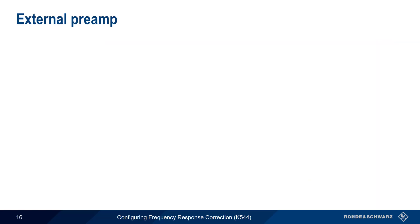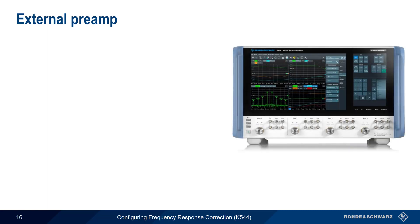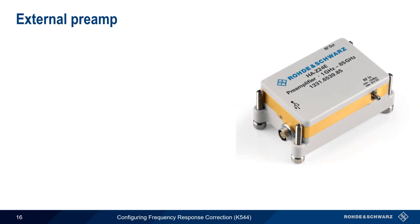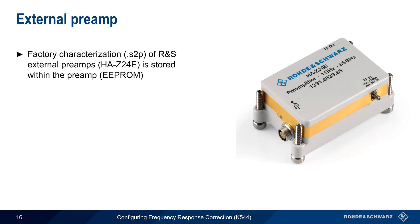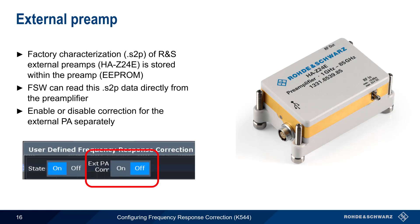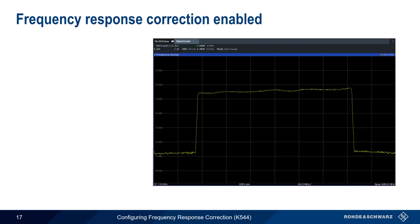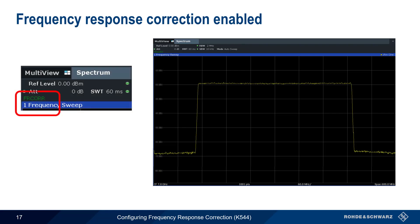Frequency response correction typically requires characterization of devices or components in the test setup using a vector network analyzer. However, in the case of the Rohde and Schwarz HAZ24E preamplifier, characterization is performed by the factory and the results are stored within the preamplifier itself. The FSW can automatically read the frequency response data from this attached preamplifier and then enable or disable correction for this device using a simple GUI toggle switch. After frequency response correction data has been loaded and enabled, switching correction on will automatically apply the correction data over the defined frequency range. Note that when frequency response correction is active, FR COR is shown in the upper left corner of the FSW user interface.